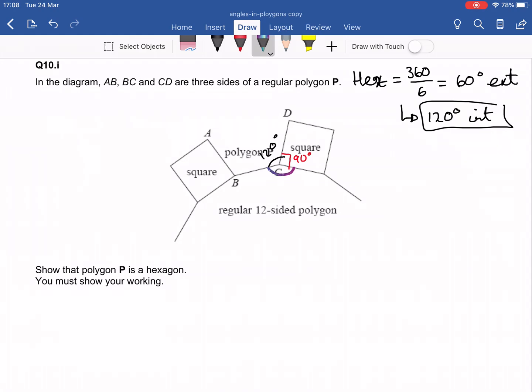So in a regular 12-sided polygon, I'm going to do 360 divided by number of sides, and that's 30. And that's my exterior angle. So my interior angle is going to be equal to 180 minus 30. It's 150 degrees. So that means this one here is 150 degrees.